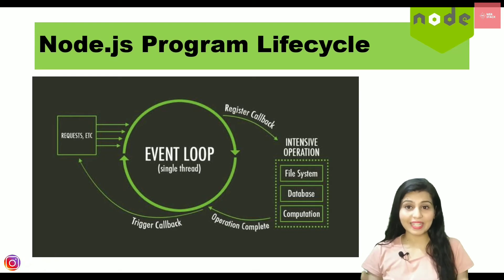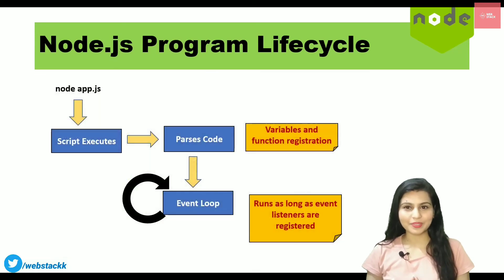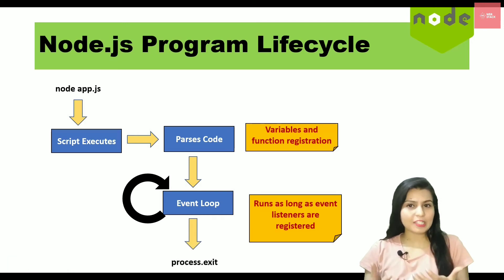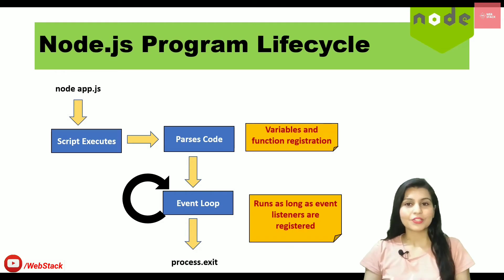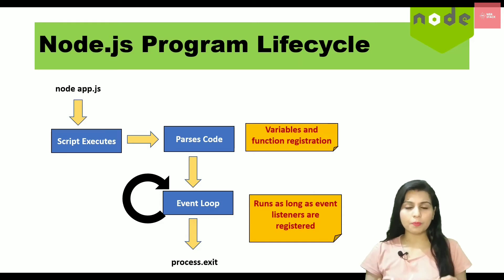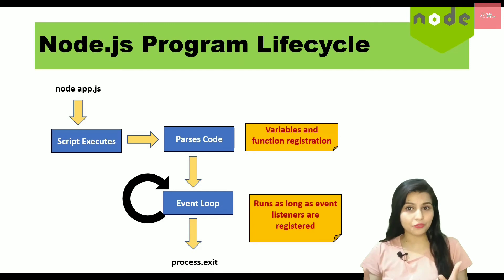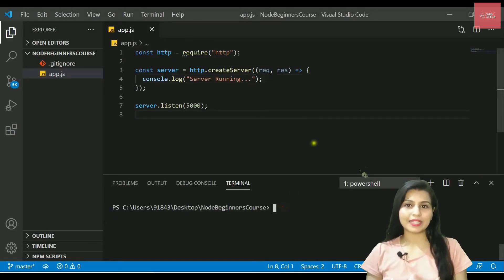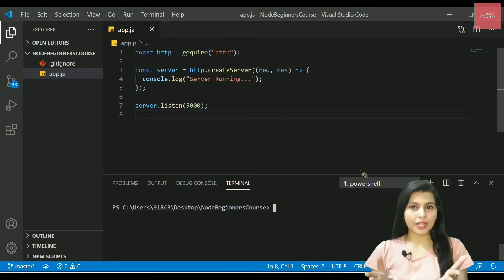We can also exit the event loop explicitly by writing 'process.exit()'. This will get out of the event loop and signal that there are no further requests to execute, so that process gets stopped. Let's check out in our code how we can exit the server.